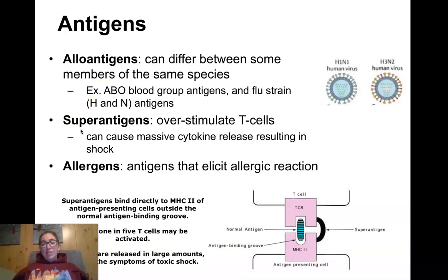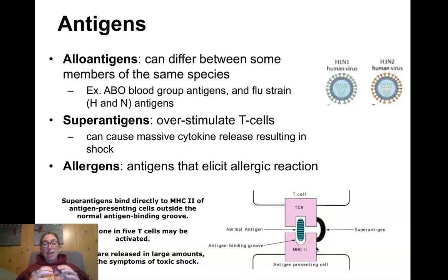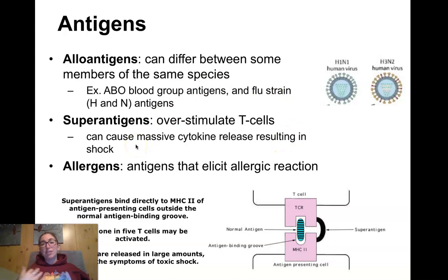A superantigen is anything that superstimulates B and T cells and overstimulates them. A regular antigen is presented by a macrophage to a T cell in a normal receptor-to-receptor fashion. But superantigens lock the receptors together, so you get superstimulation of the T cell, which results in a chain reaction that superstimulates other arms of the immune system. This can lead to toxic shock. Superantigens are particularly dangerous because they overstimulate our immune system to a point where it actually damages us.